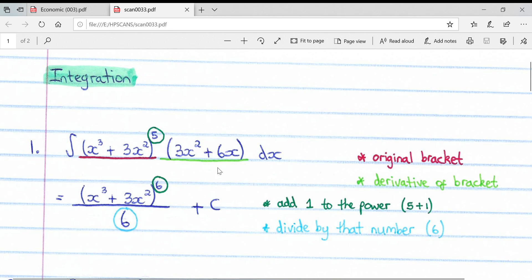We can see our integral sign and our dx, which tells us we need to integrate. What we're looking for is whether the bracket on the right-hand side is the derivative of what's inside the bracket. We can say if we had to derive what's inside the bracket, we would get 3x squared plus 6x. So this helps us.